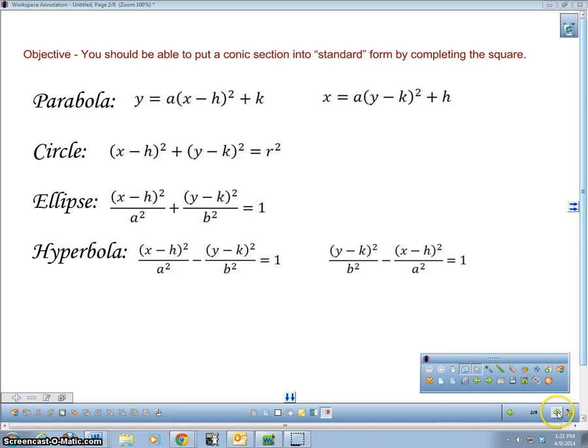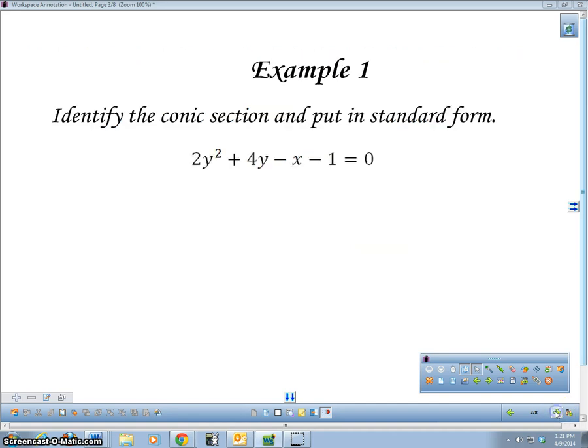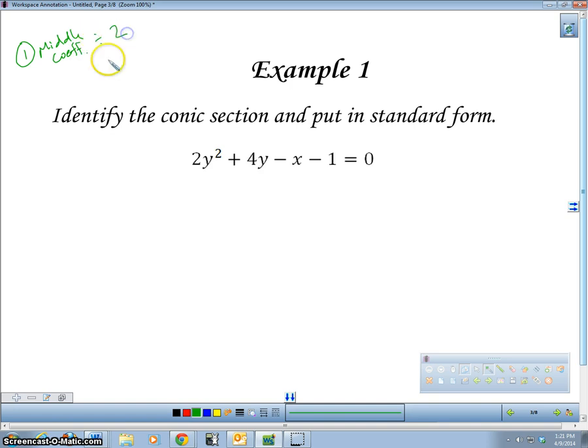Okay, so now let's go on to our examples. We're going to identify the conic section and put it in standard form using completing the square. And just a quick review of completing the square. We're going to take the middle term, the middle coefficient, and then divide that by 2. And then we're going to square that. And then we're going to add that to both sides. That's how we complete the square.